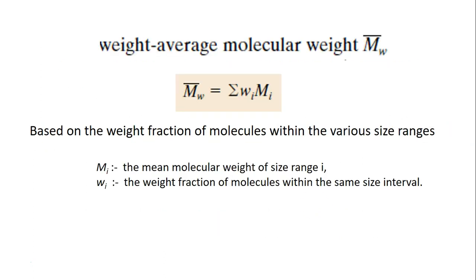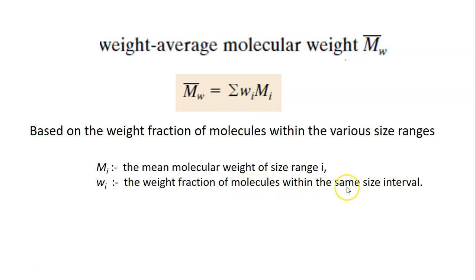The second type is called weight average molecular weight. For this, we simply substitute xi with wi, where wi is the weight fraction of molecules within the same size interval. So the weight average molecular weight, Mw, equals the summation of wi times mi, based on the weight fraction of molecules within the various size ranges.